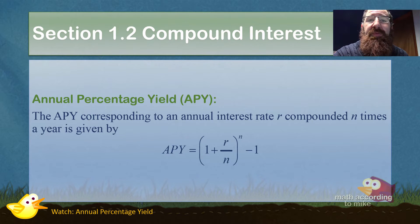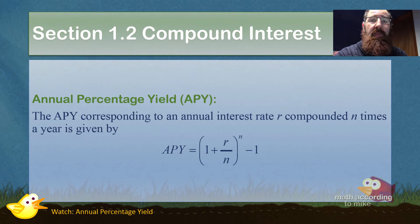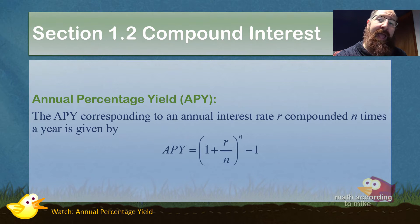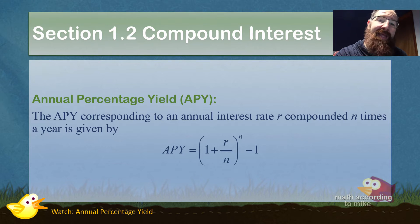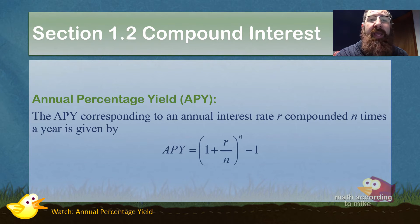There are times where a bank will give you two different interest rates at two different rates of compounding, and it is difficult to compare apples to apples. For instance, if you had a 5.4% compounded monthly versus a 5.3% compounded daily, it's hard to know which one is the best option whether you're trying to save or trying to take out a loan.